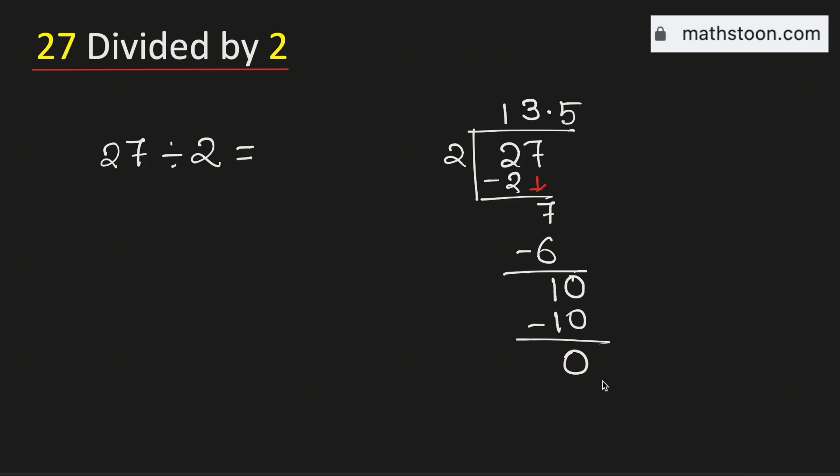As we have obtained the number 0, so we will stop. Therefore 27 divided by 2 is equal to 13.5 and this is our final answer. Thank you for watching.